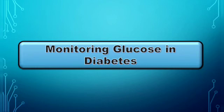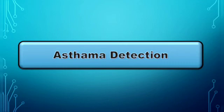A nitric oxide nanosensor has been developed which can detect asthma by breath analysis. Researchers have also developed a nanobiosensor based on single-walled carbon nanotubes and gold electrodes on a silicon oxide substrate for detecting asthma attacks before three weeks of their occurrence by testing the nitric oxide in patients' breath.